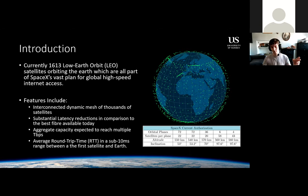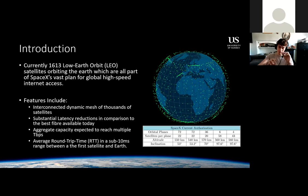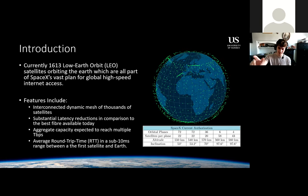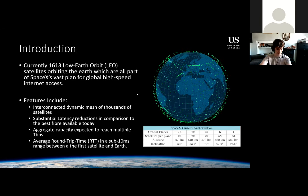No matter where you are, they want you to be able to use a terminal to connect to their satellite network. On the right you can see the image of where the satellites are currently deployed — they kind of ignore the polar regions at the moment, primarily because that's not where it's needed most, but as the constellation develops it will be deployed there too. The characteristics shared by SpaceX through their filings show 72 orbital planes with 22 satellites per plane at an altitude of 550 kilometers. The altitude was reduced mainly to reduce latencies and prevent collision risks.